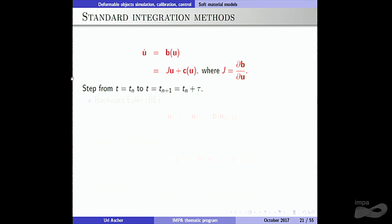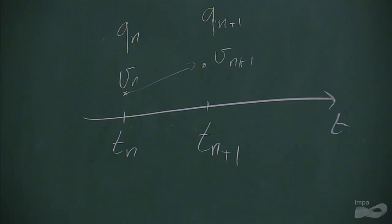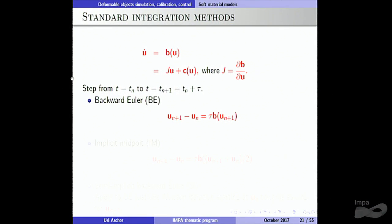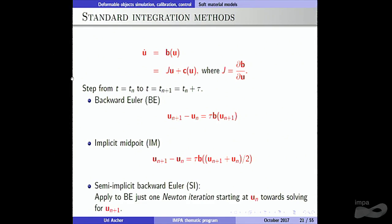Backward Euler says: u at the next step equals u at the current step plus the step size times the right-hand side evaluated at the unknown level. Implicit midpoint is the same but uses an average of the known and unknown levels — a symmetric, conservative method. The SI method is essentially one Newton iteration for the backward Euler system. It turns out that solving nonlinear equations is more difficult for the conservative method, while backward Euler gives high damping.